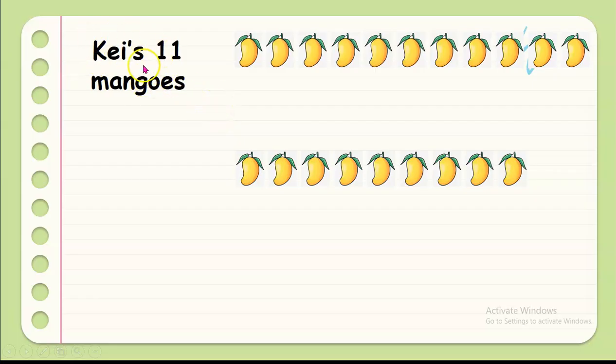Now, these are Kay's 11 mangoes. 1, 2, 3, 4, 5, 6, 7, 8, 9, 10, 11. And he wanted to share 1 to his friend Neil so that both of them could bring home the same number of mangoes. That's why he gave 1 to his friend.